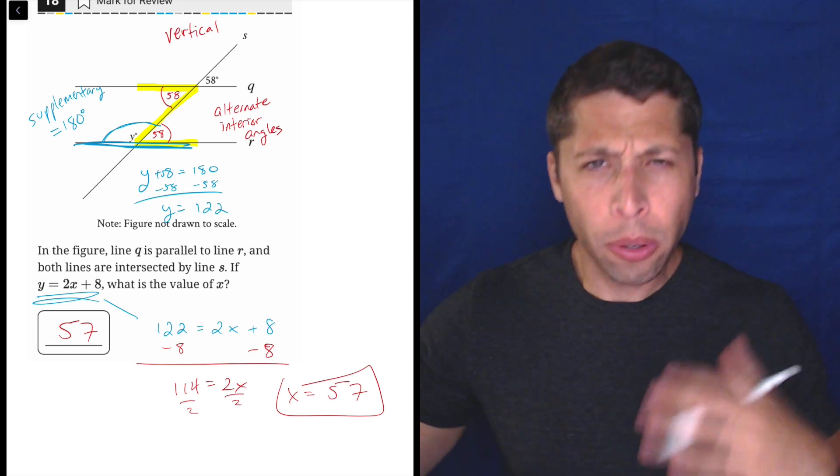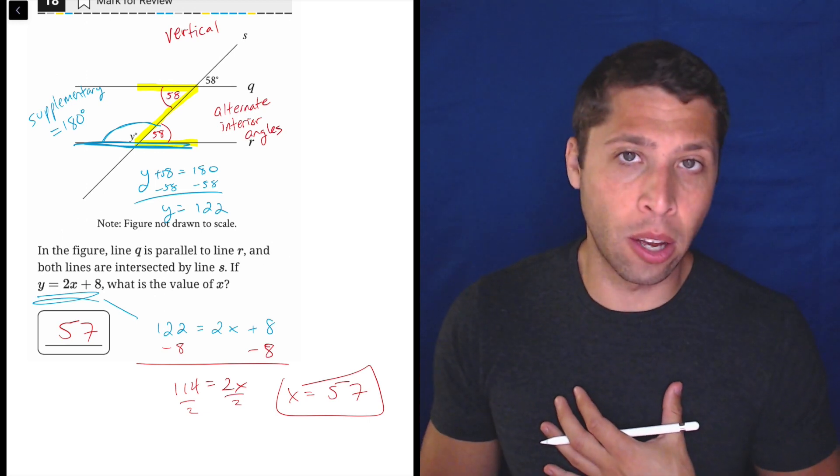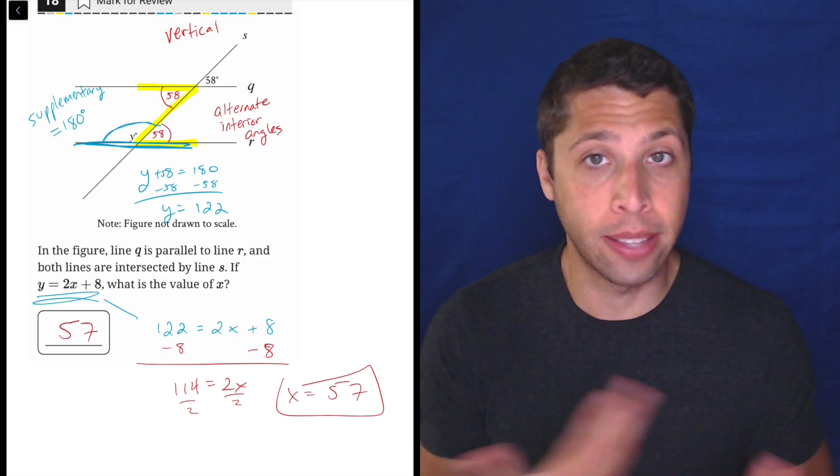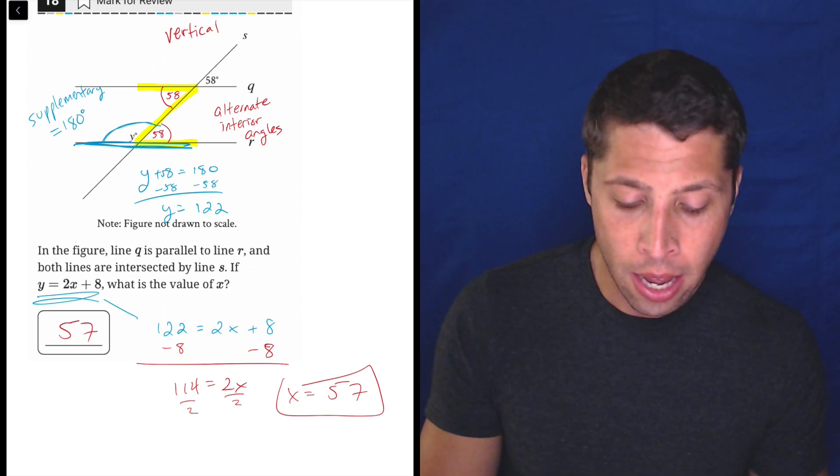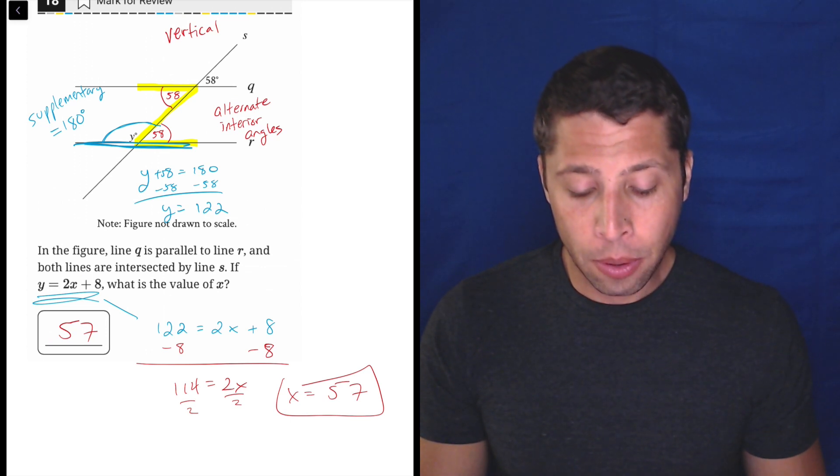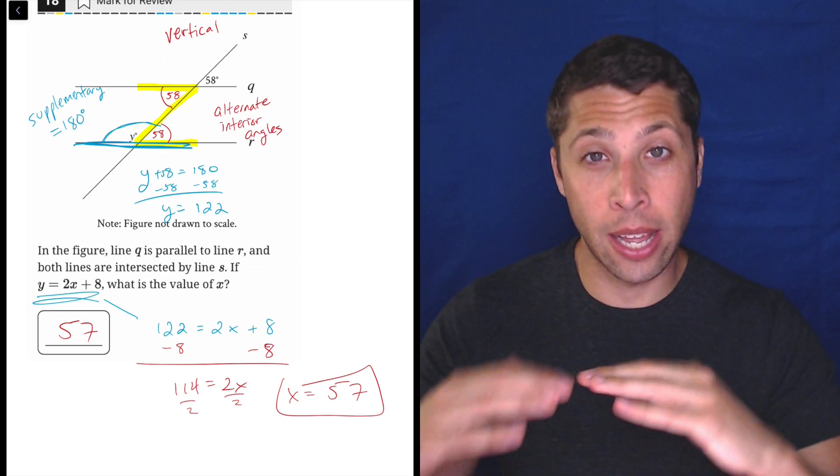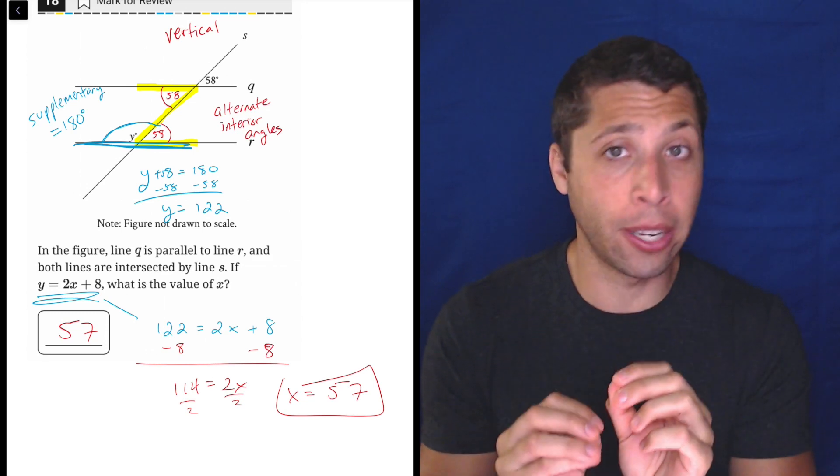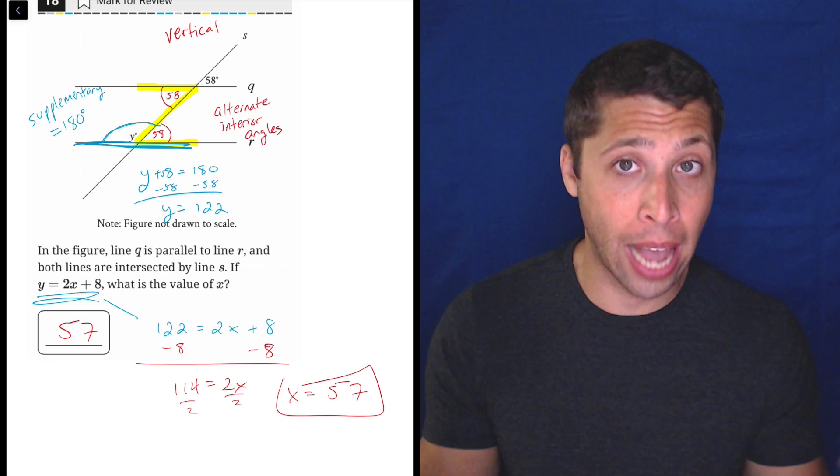There we go. So there were a couple of places to make some mistakes. It's just a coincidence though, that the 57 is close to the 58 that we had. That's just a coincidence. There's nothing to do with geometry or any rules or anything like that. But the main thing for all of these questions is being able to navigate that picture, that Z picture and be able to move around it and know which angles are going to be the same and which angles are going to be supplementary, add up to 180.